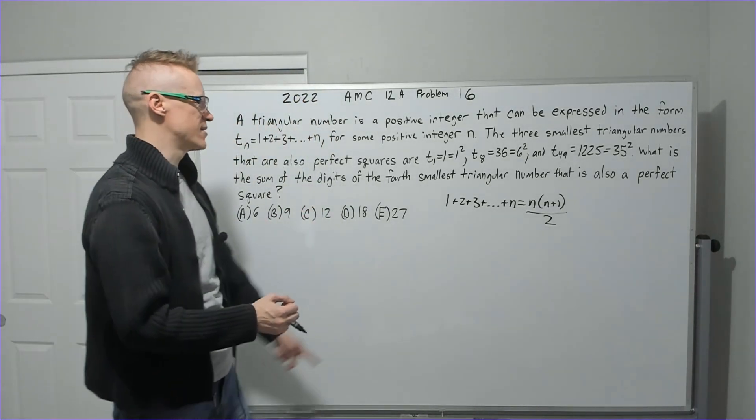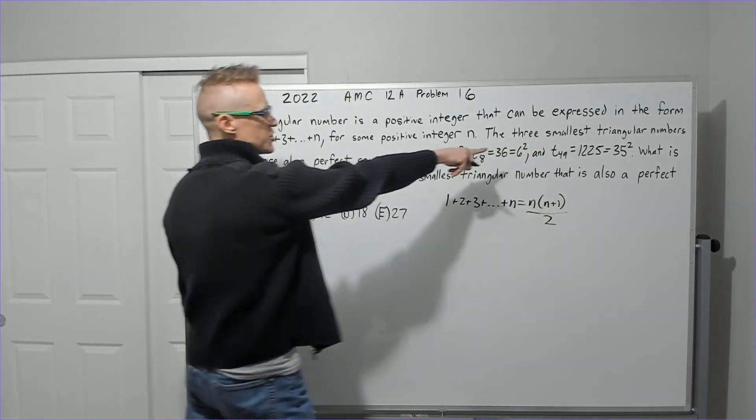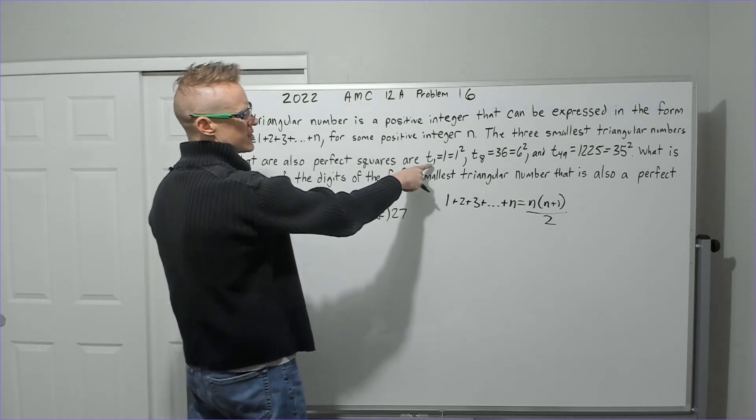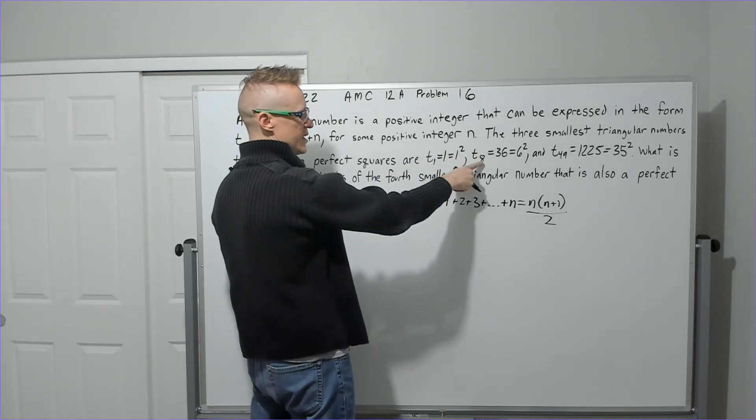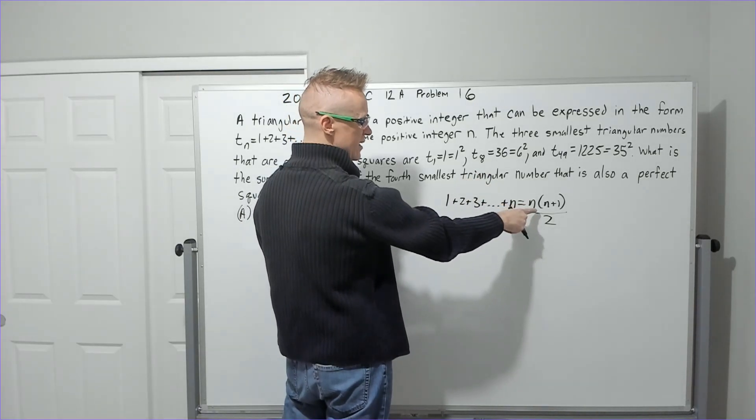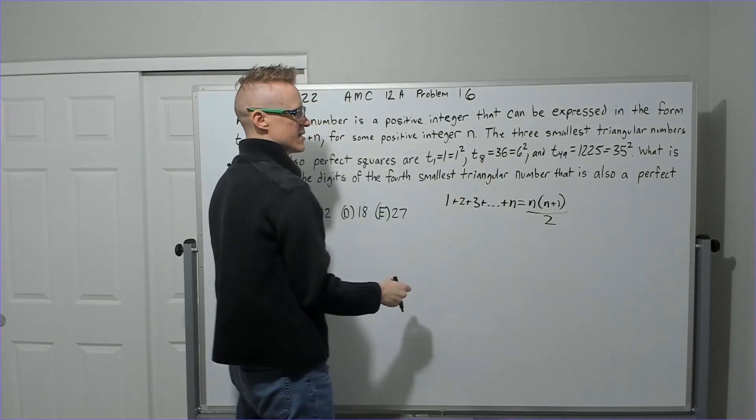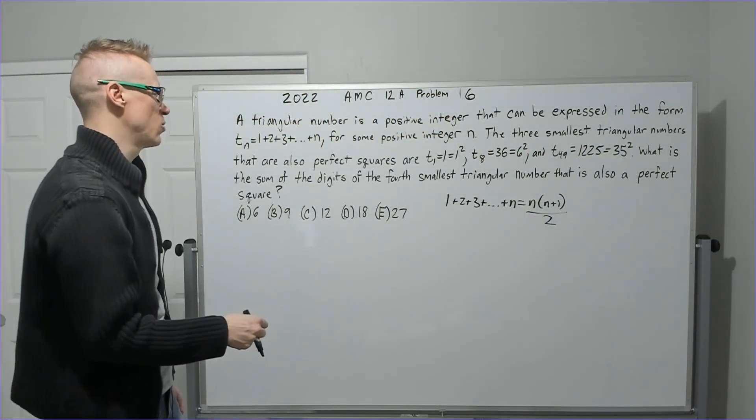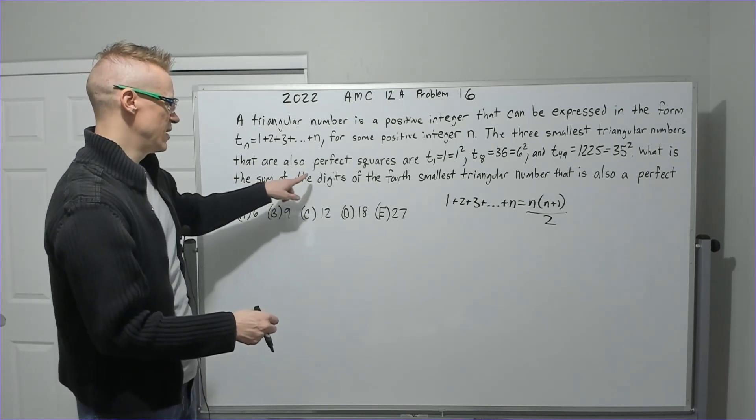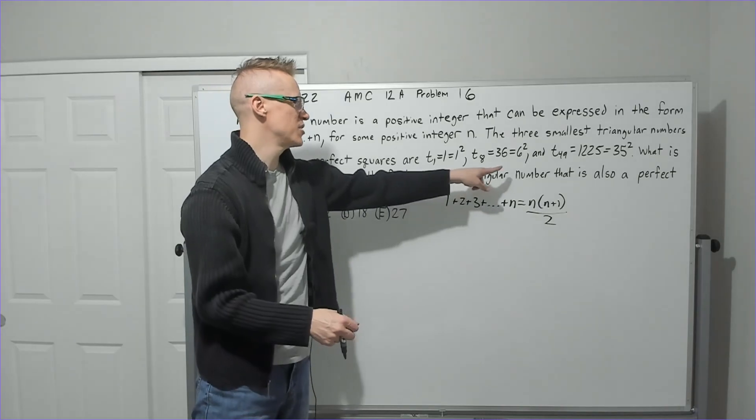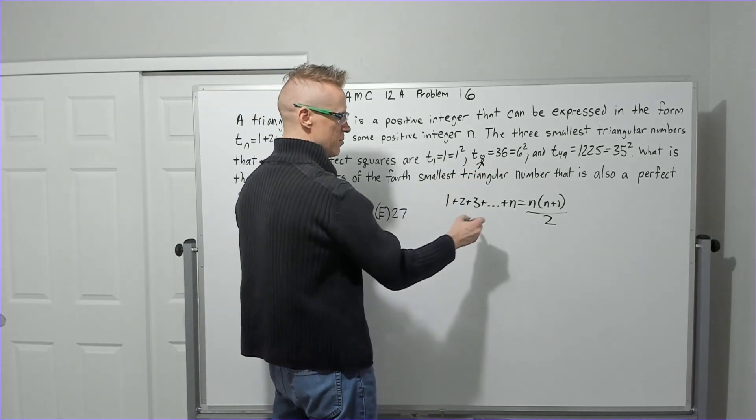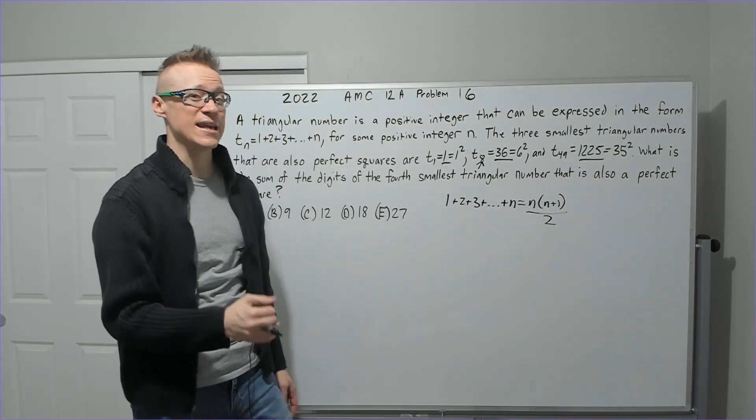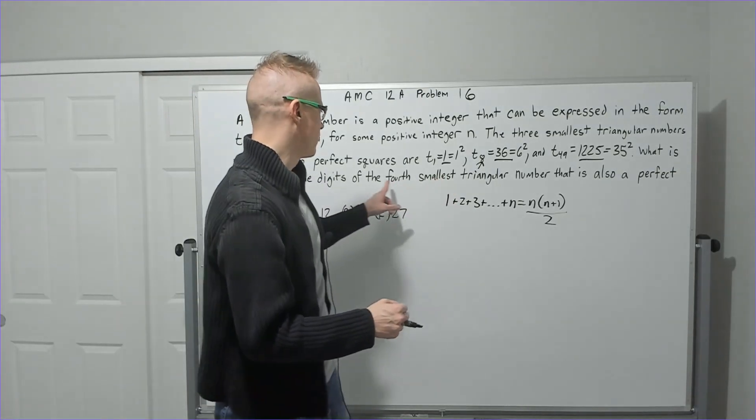The three smallest triangular numbers that are also perfect squares are T_1 equals 1 which is 1 squared, T_8 - let's go ahead and drop 8 in here - 8 times 9 over 2 equals 36 equals 6 squared, and T_49 which ends up being 35 squared. What is the sum of the digits of the fourth smallest triangular number? We're not talking this term, we're talking the 36 or the 1 or the 1225. Those are the actual triangular numbers, so we have the fourth smallest one that is also a perfect square like those three are.